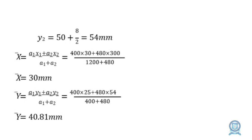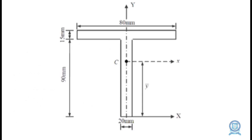Substituting all a1, a2, x1, x2, y1, y2 values into the general centroid formula: x̄ = (400 × 30 + 480 × 30) / (400 + 480) = 30 mm. ȳ = 40.81 mm. Plotting x̄ = 30 and ȳ = 40.81 in the T section, we get centroid point C marked as a dark dot. This is the general location of the centroid for an axis-symmetrical T section. Thank you.